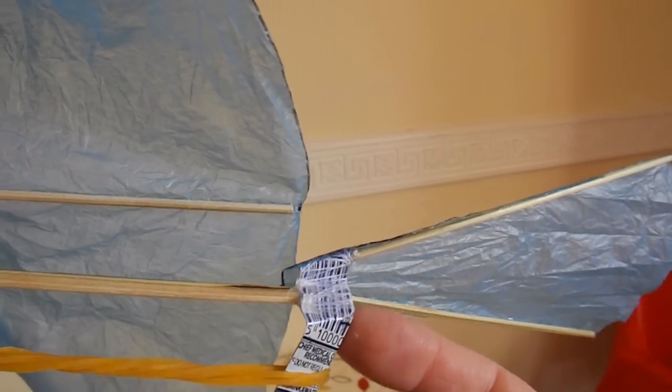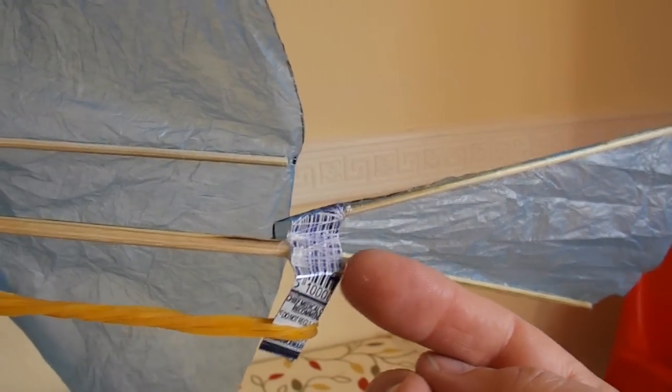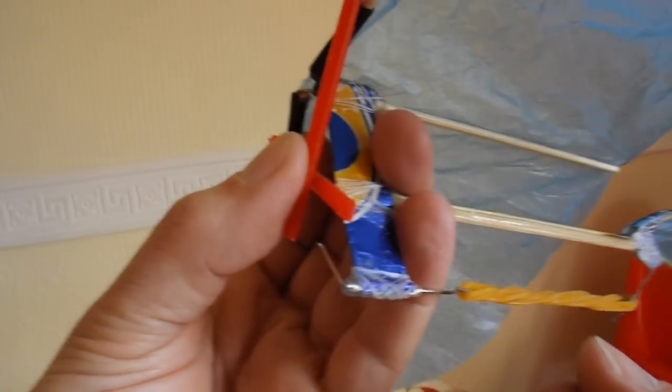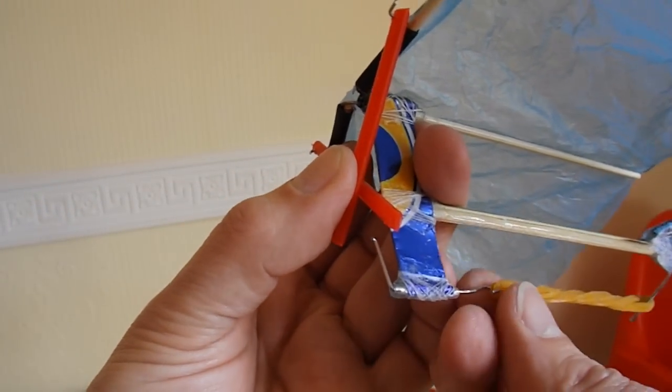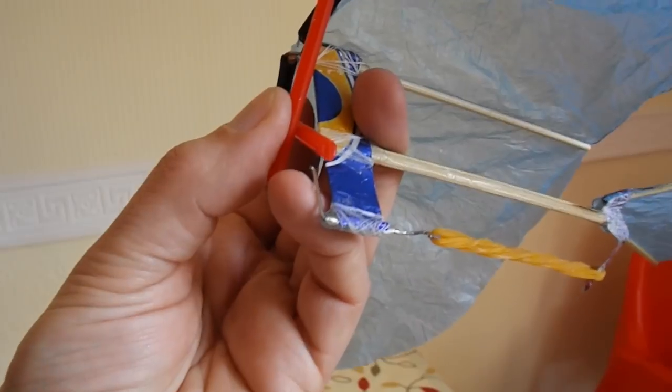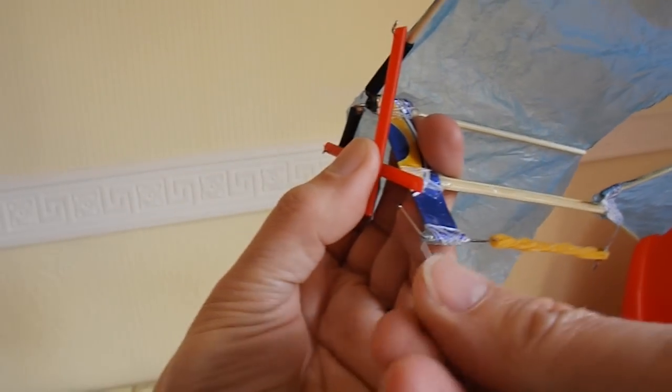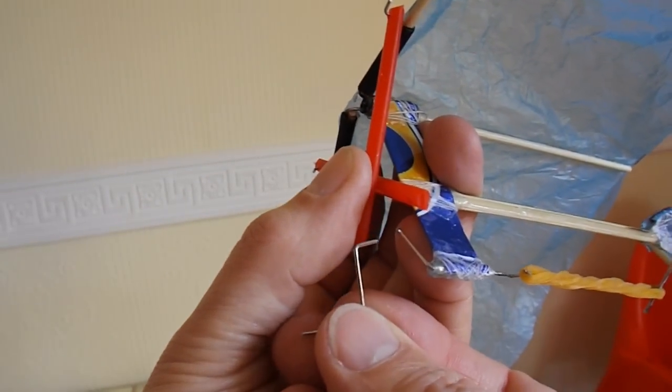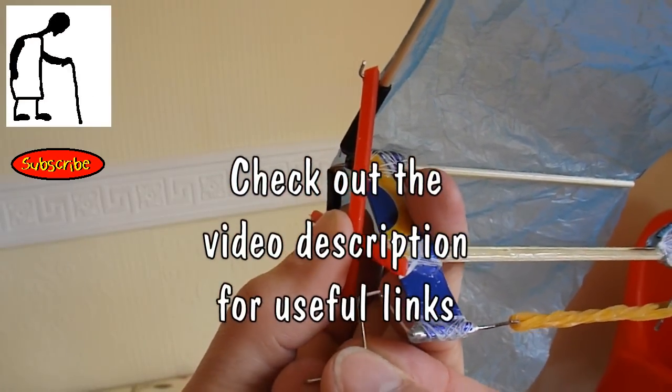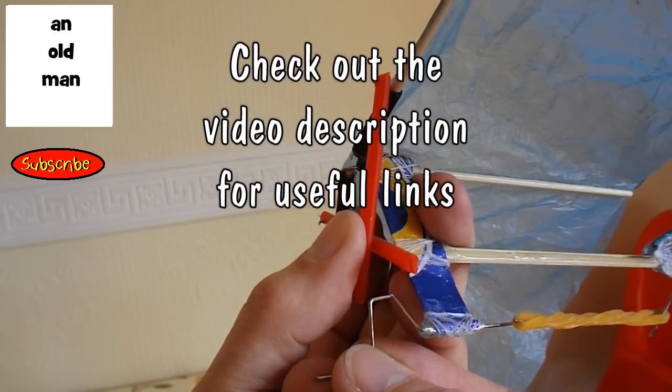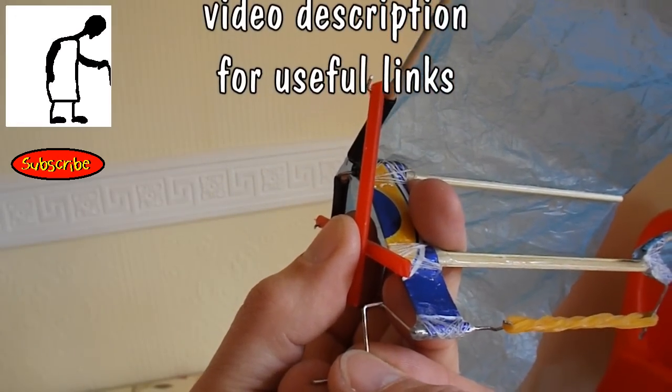I could connect the rubber bands further up and it still worked. What actually failed this time was the, I suppose we could call it the crankshaft, the bit of bent paperclip. That broke just there. So again, that's nothing wrong with the design. That's just my paperclip gave up. So that's repairable.